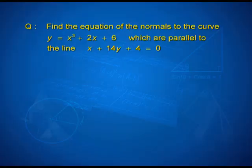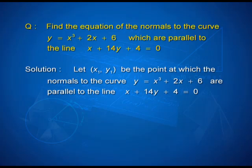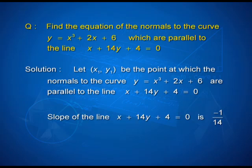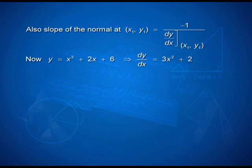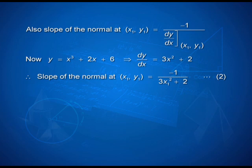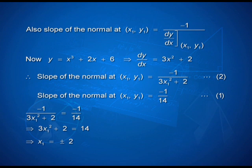Starting off, let (x₁, y₁) be the point of contact at which the normals to the curve are parallel to the given line. Therefore, the slope of the line, which is −1/14, becomes the slope of the normal to the curve at (x₁, y₁). We also know the slope of the normal is the negative reciprocal of the derivative at that point. The derivative is 3x² + 2, so the slope of the normal in terms of the derivative is −1 / (3x₁² + 2). Equating the two quantities gives a relation in x₁, yielding two values of x₁ and therefore two values of y₁, since (x₁, y₁) lies on the curve.